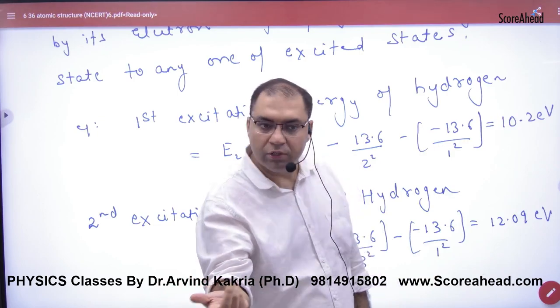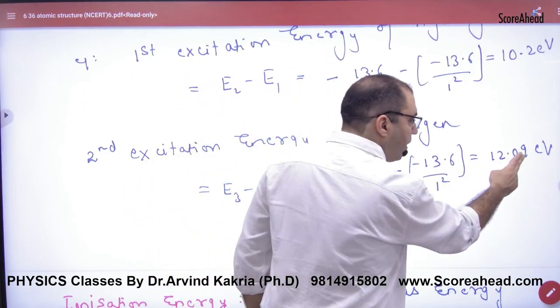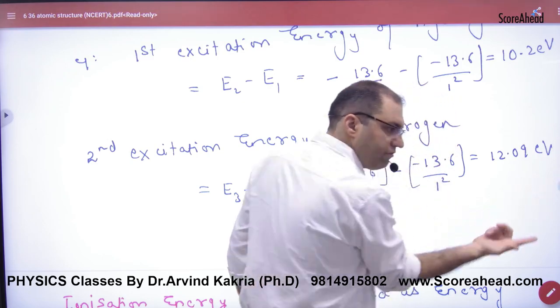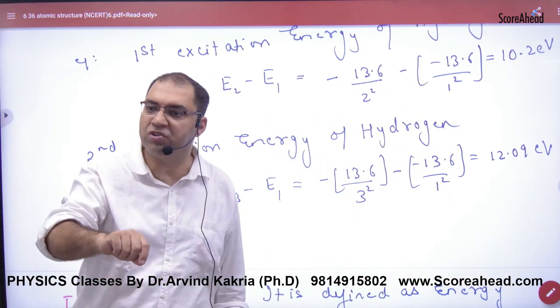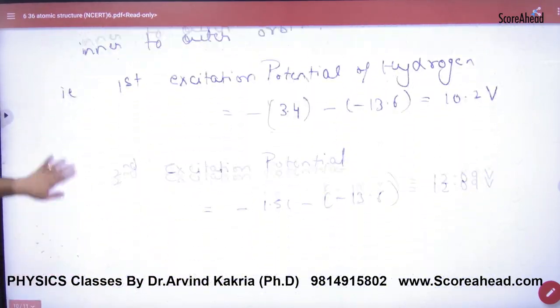Second excitation potential will be 12.09 volts. So excitation potential is in volts, and if it's energy (E), then it's excitation energy. This is the difference. Is the point clear here?